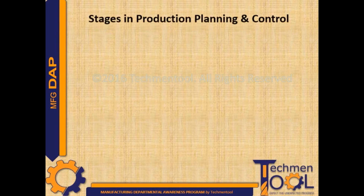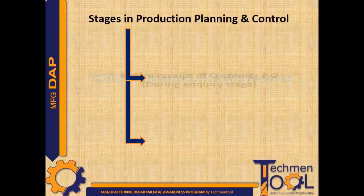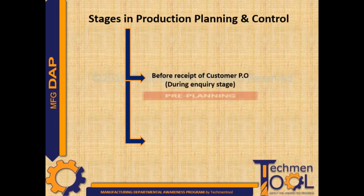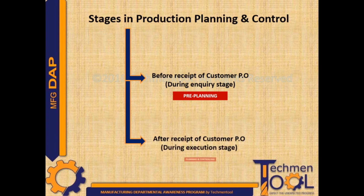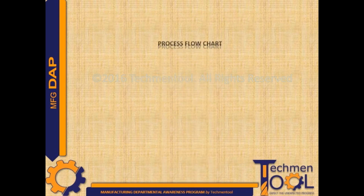There are two stages in production planning and control. Before receipt of customer order, during the enquiry stage, this is called the pre-planning stage. After receipt of customer order, during the execution stage, this is called the planning and controlling stage.